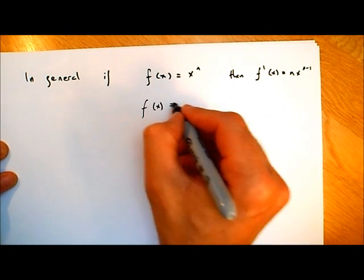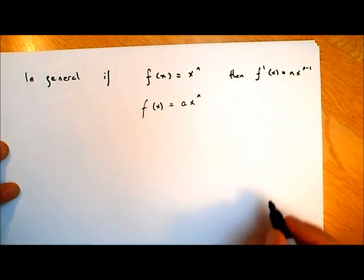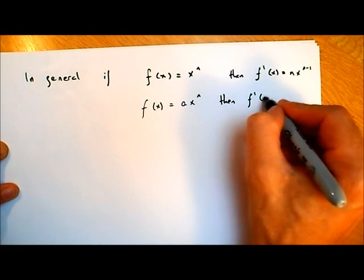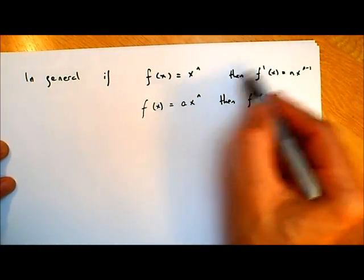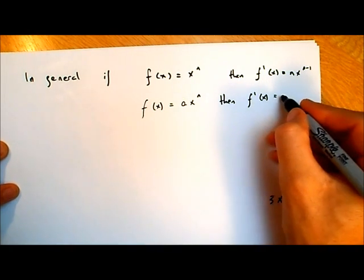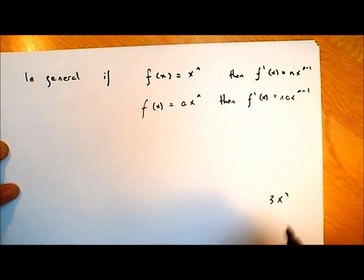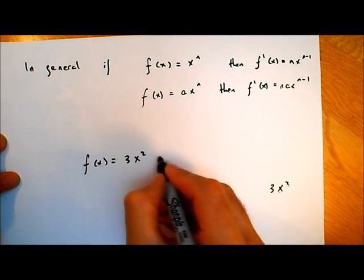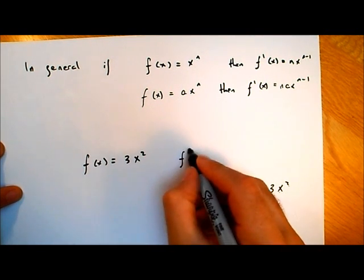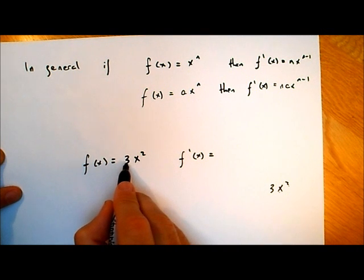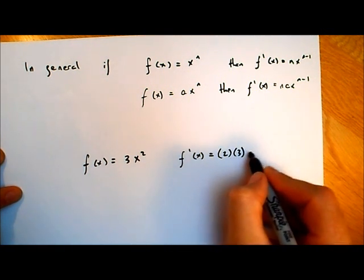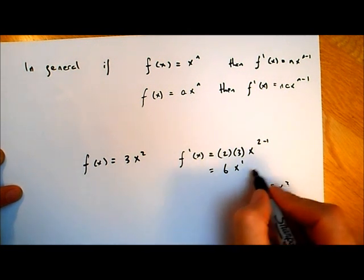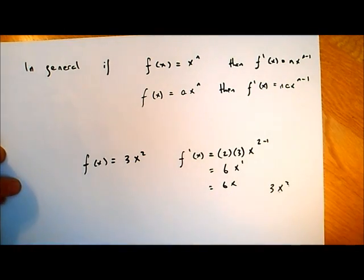Here's another rule. If f of x is equal to a multiplied by x to the power of n — something like 3x squared — then f dash of x is the same process except we multiply n by the a. So it'll be n times ax to the power of n minus 1. For example, if f of x is equal to 3x squared, n is 2 and a is 3, so f dash of x is 2 times 3 times x to the power of 2 minus 1, which is 6x to the power of 1, just 6x.